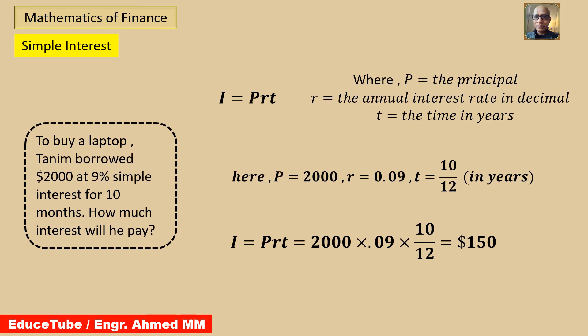Today my topic is simple interest and compound interest. Simple interest is a type of interest that is charged or paid only on the amount borrowed or invested, and not on past interest. The amount borrowed is called the principal. The rate of interest is the percentage per year, expressed in decimal, and time is the period the money is earning interest, measured in years.